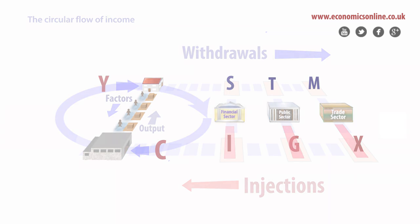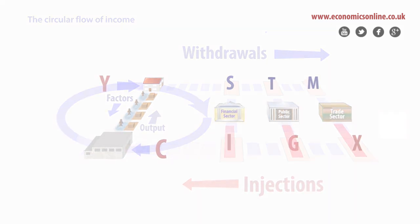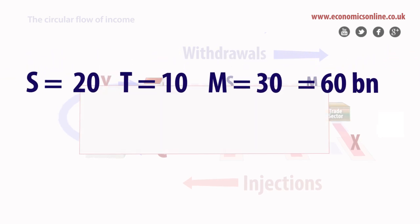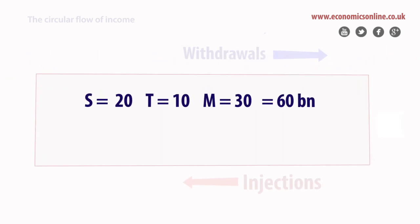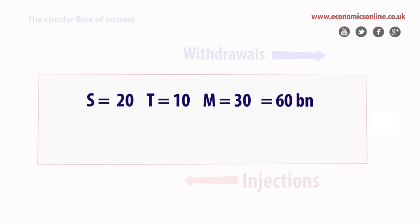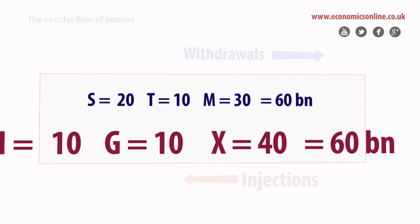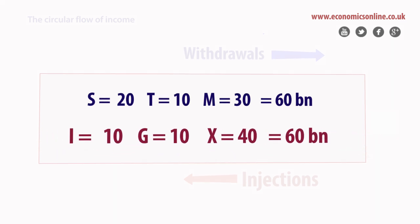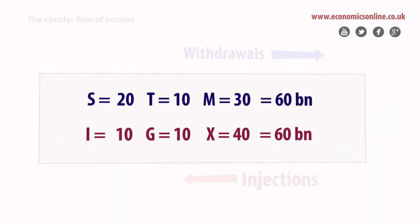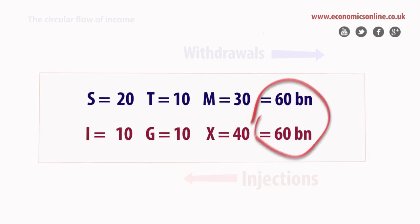For an economy to be in overall equilibrium, it is not necessary that each pair of injections and withdrawals are equal, only that the sum of withdrawals and injections equate. For example, if savings equals 20 billion, taxation is 10 and imports are 30, while investment and government spending equal 10 each, and exports are 40, then injections and withdrawals are both 60 billion, and the economy is in equilibrium.